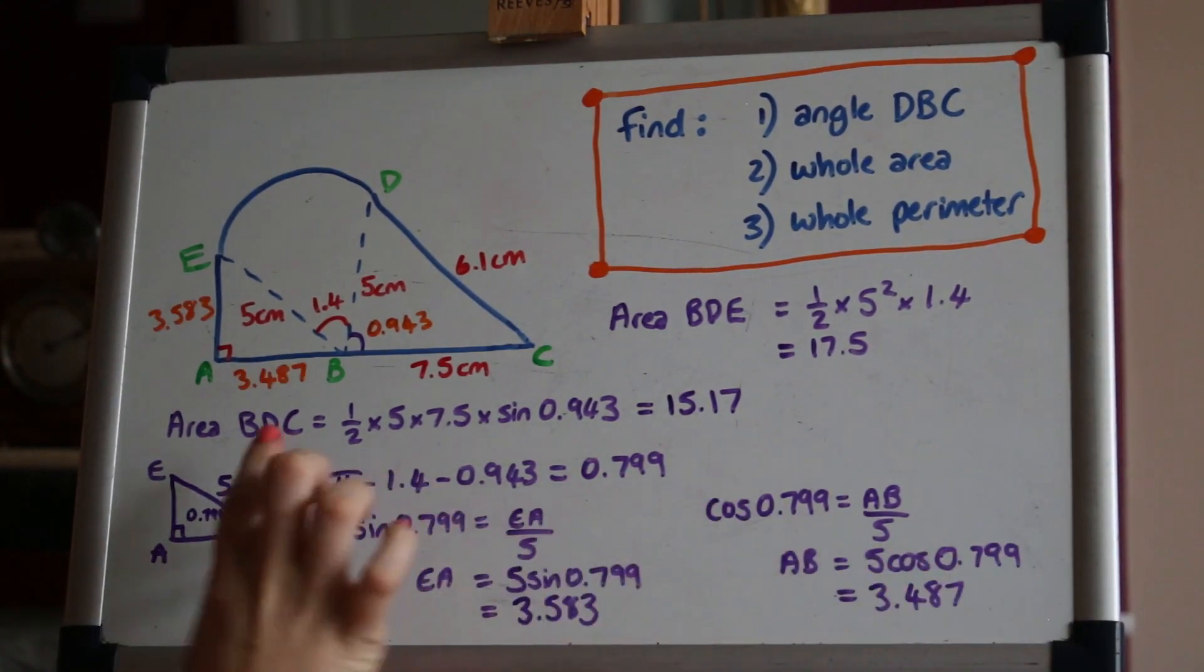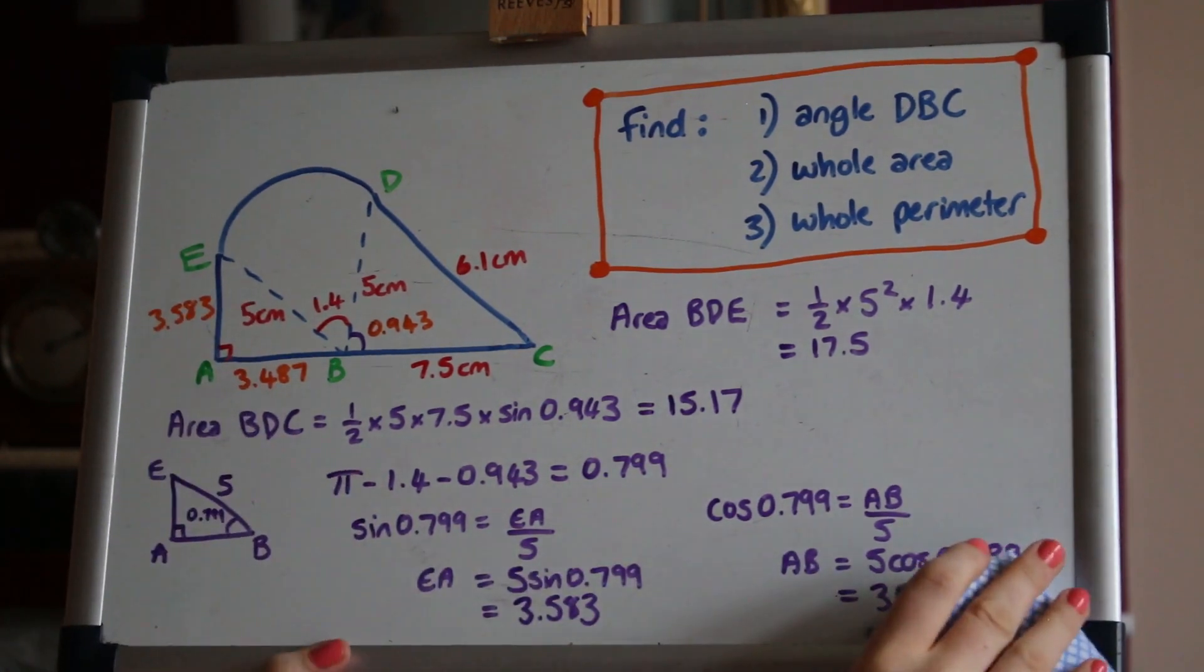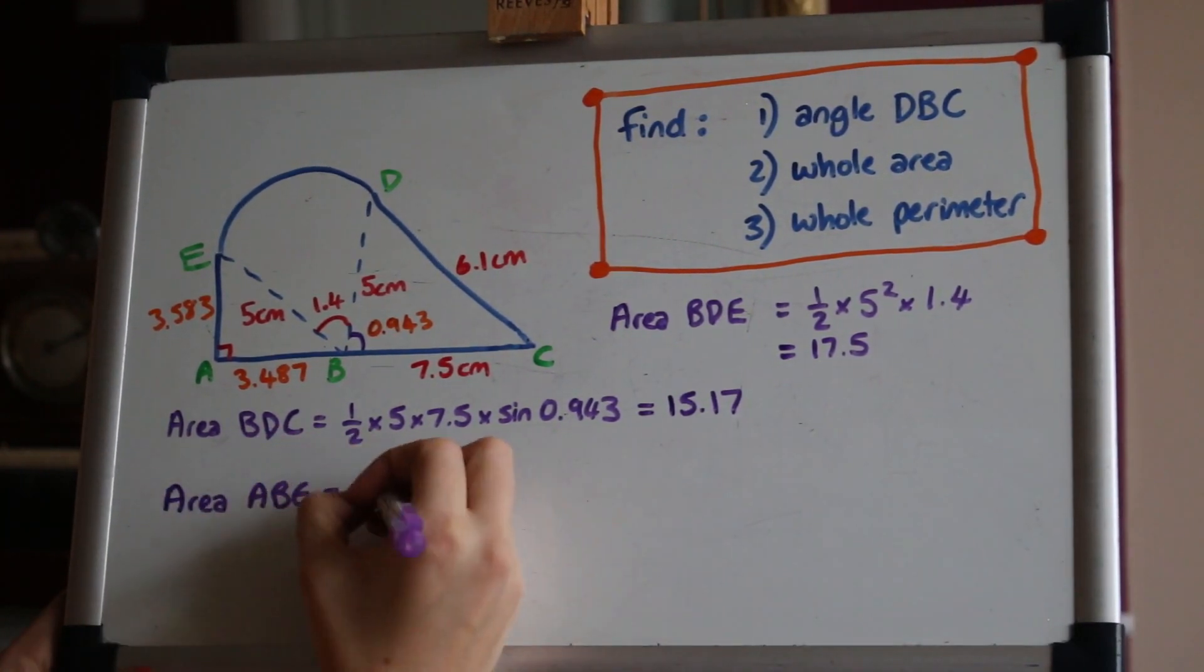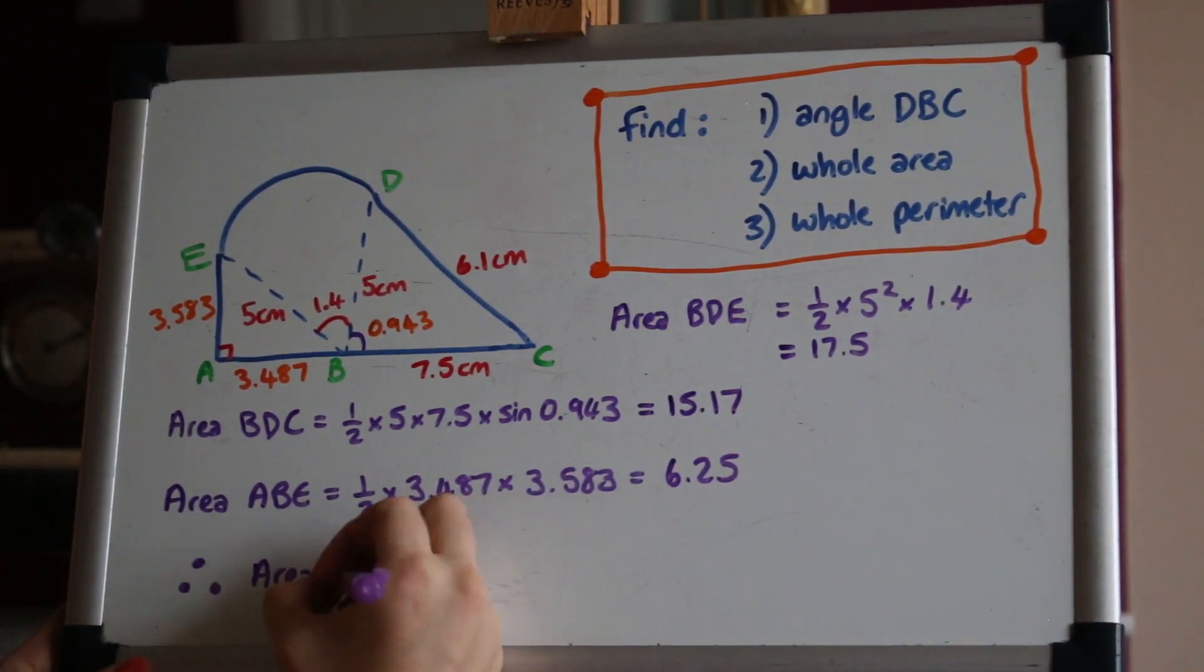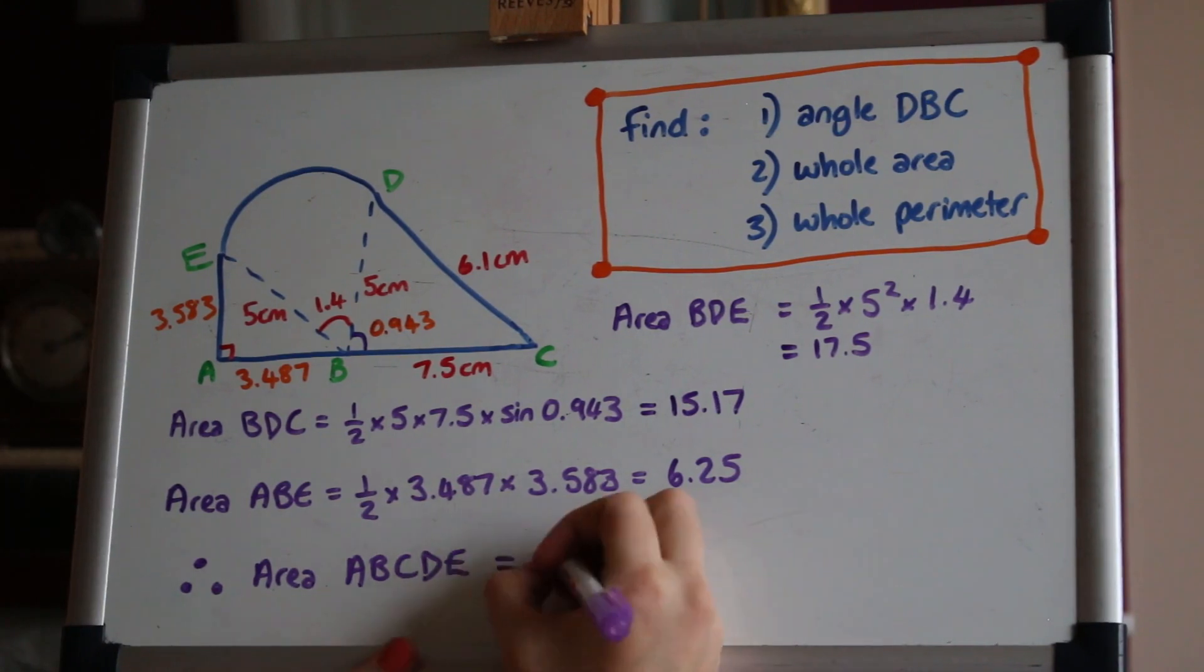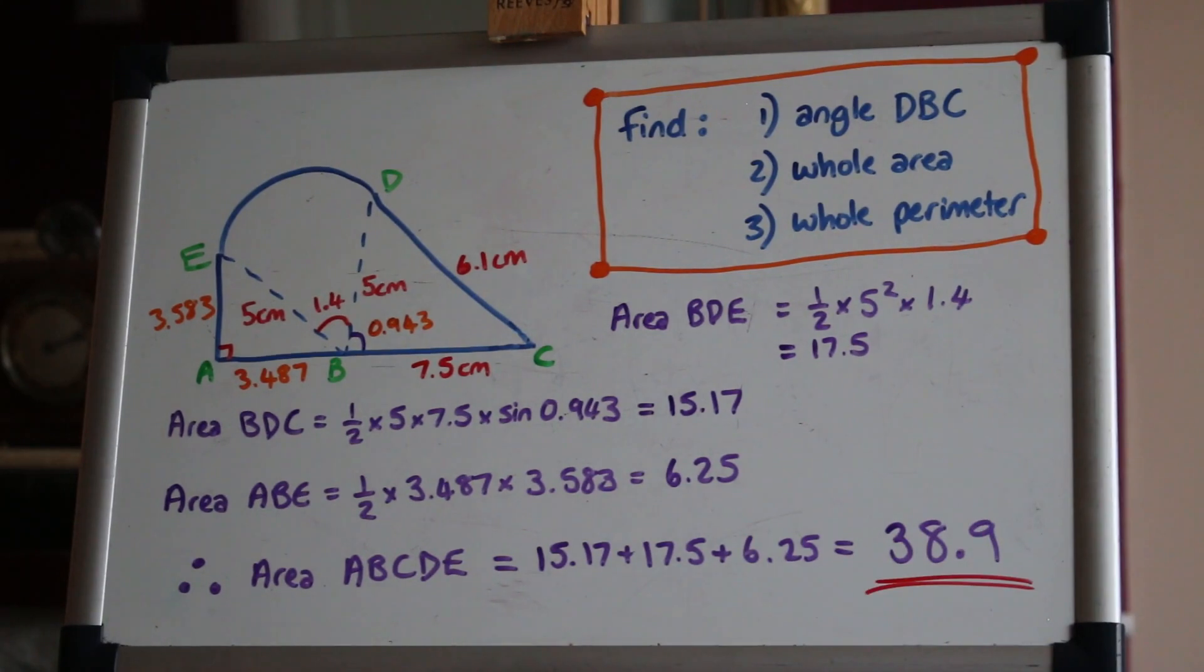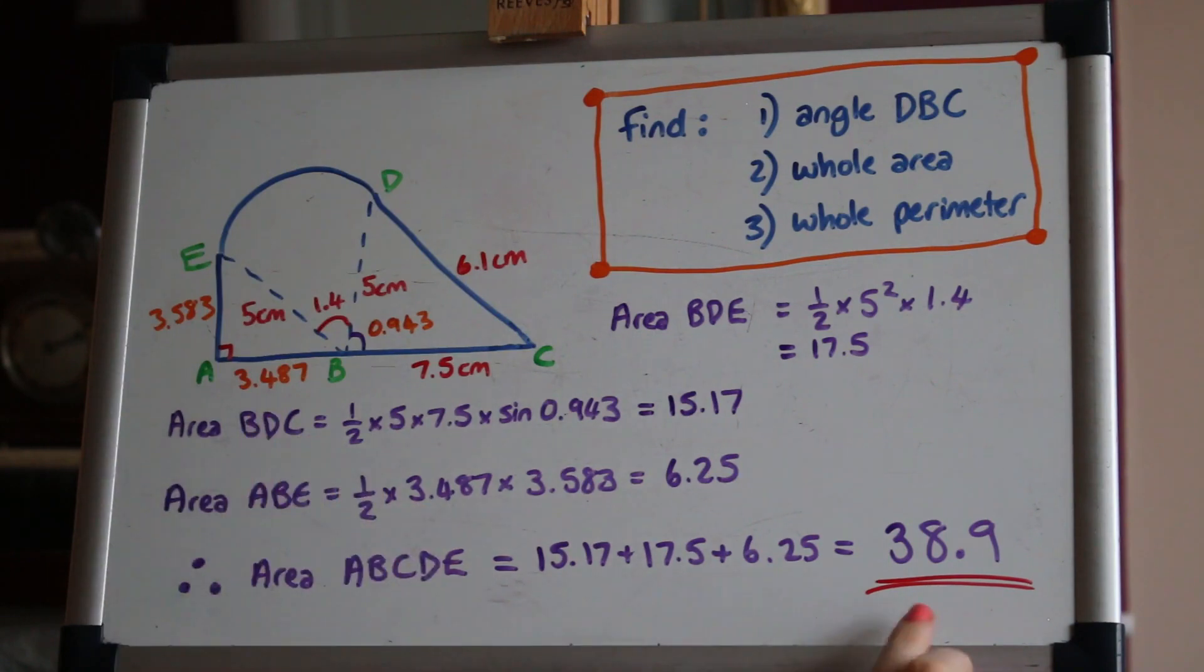So I've used the basic trig there to get those two lengths and I've marked them on the diagram. I'm going to have to clear this to make some room but now we can go ahead and find the area of that little right angle triangle using a half base times height and then we can add up all the areas that we found to get the area of the entire shape 38.9 cm².